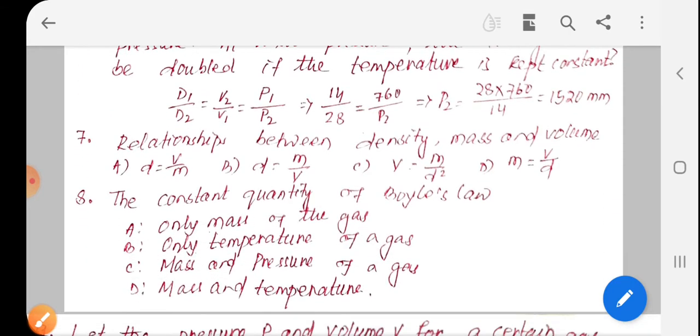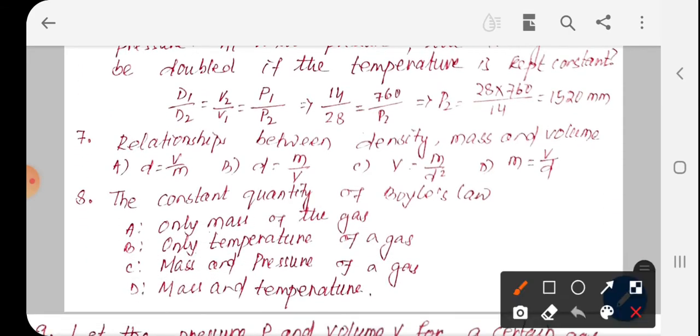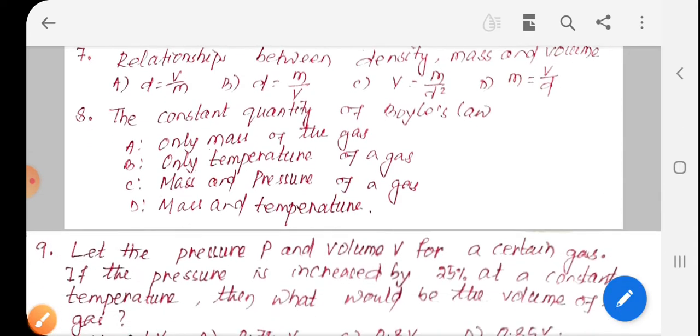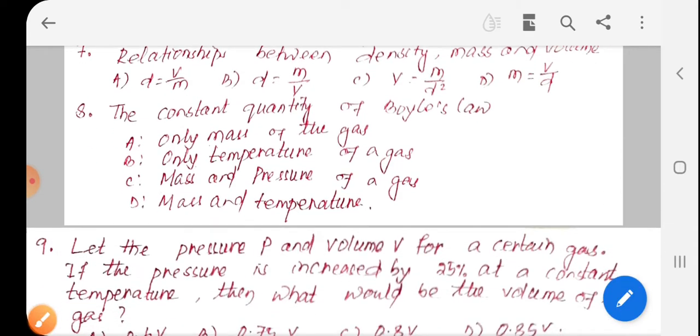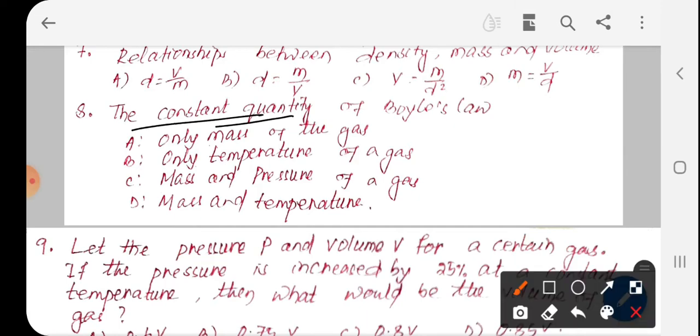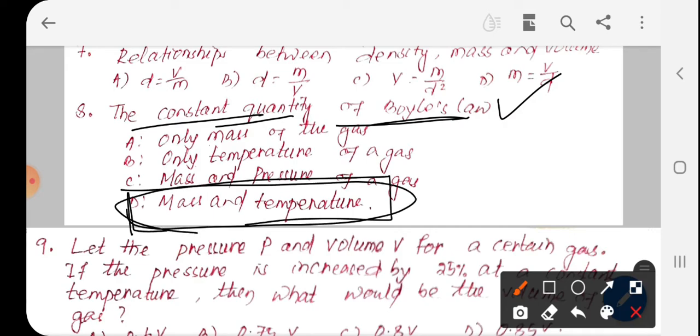Next question: the relationship between density, mass and volume. Density equals mass per volume. Question number eight: constant quantity of Boyle's Law, constant mass at constant temperature.